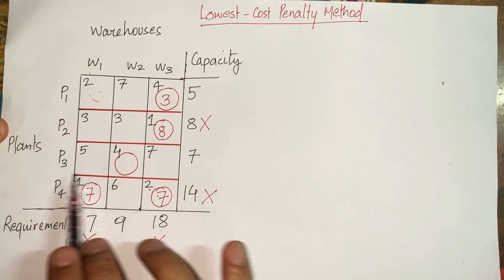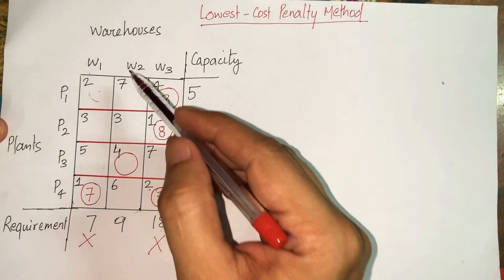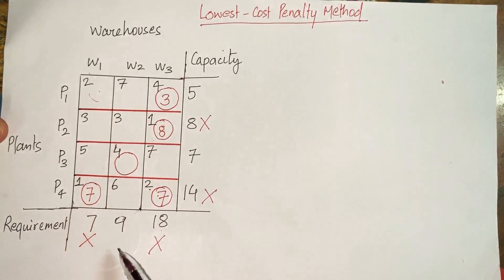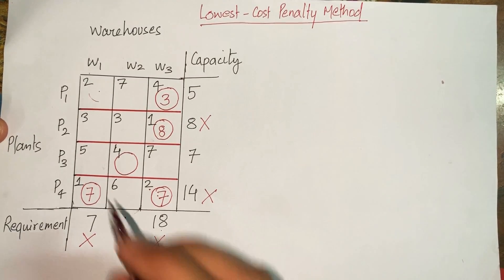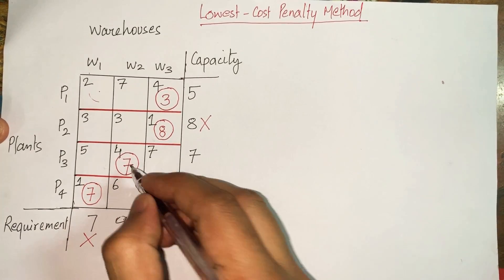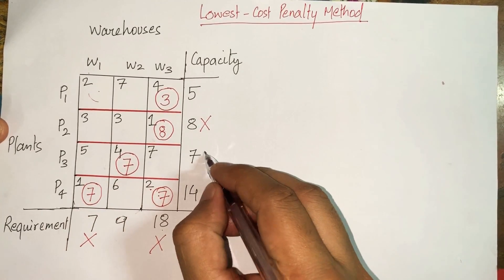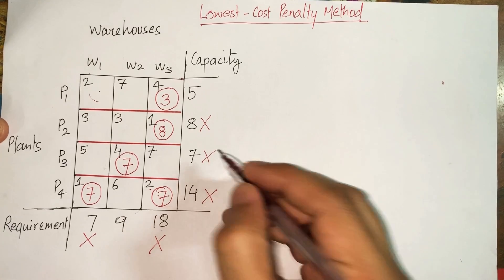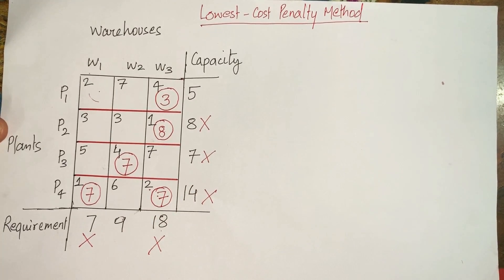The next minimum cost cell has cost 4. Plant P3 has 7 units to supply and warehouse W2 has a requirement of 9 units, so P3 supplies all 7 of its units to W2.